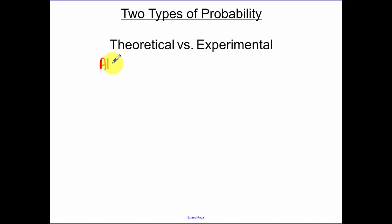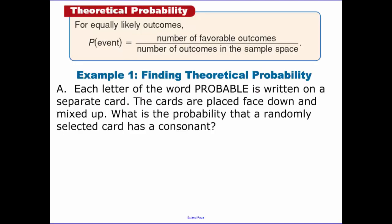Theoretical, we're going to be doing a lot of it, and that's going to be using algebra to calculate. Experimental is looking at results from an experiment and looking at the probability that an event is going to happen. So theoretical probability is the probability of some event is the number of favorable outcomes versus the total amount of possible outcomes. So our first example.